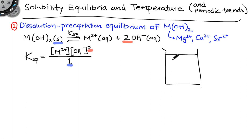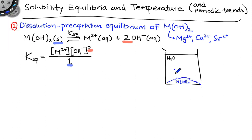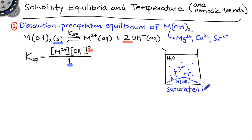In practice, to think about KSP, we need to think about a saturated solution of the metal hydroxide in water. We're going to dissolve our metal hydroxides in water with excess solid present so that both dissolution and precipitation processes are happening on the surface of the solid. At equilibrium, we'll have equal rates of the ions joining the solid and leaving the solid, and the solution will be saturated in the metal hydroxide — meaning it will have the maximum amounts of M2+ and OH- dissolved based on the value of KSP and the thermodynamics of the process.